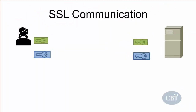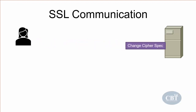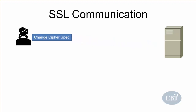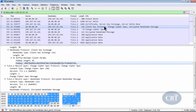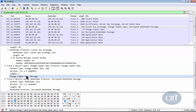The client sends a message called change cipher spec to inform the server that all subsequent data will be encrypted with the newly negotiated cipher spec and keys. In Wireshark, right after the client key exchange, you can see the change cipher spec packet — the message telling the server that all subsequent messages will be encrypted with the agreed algorithms and keys.